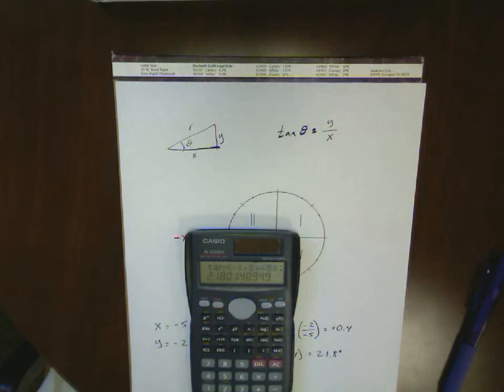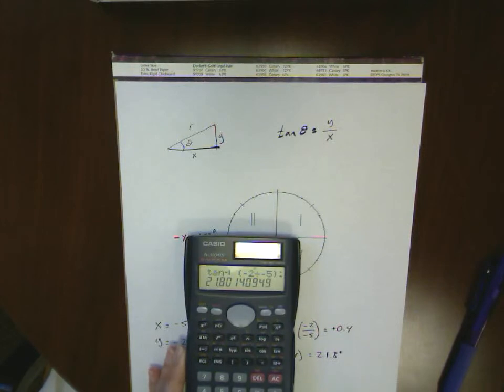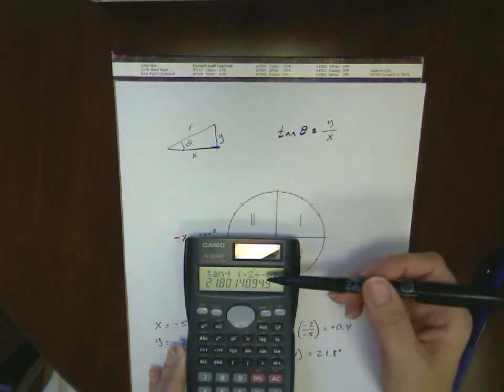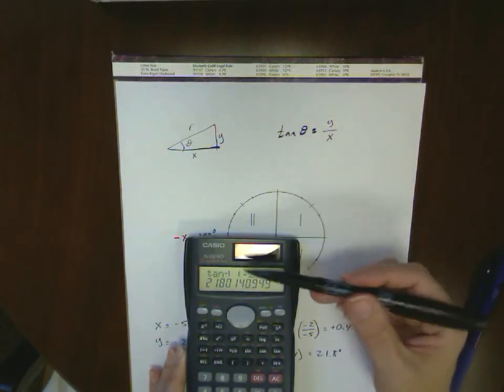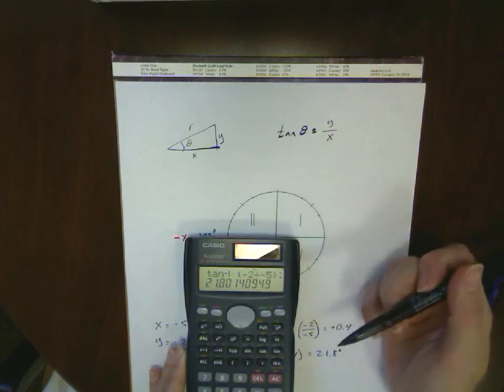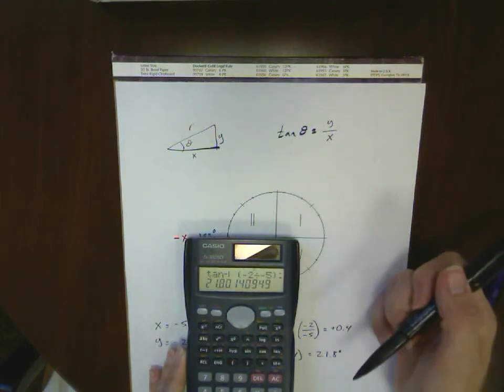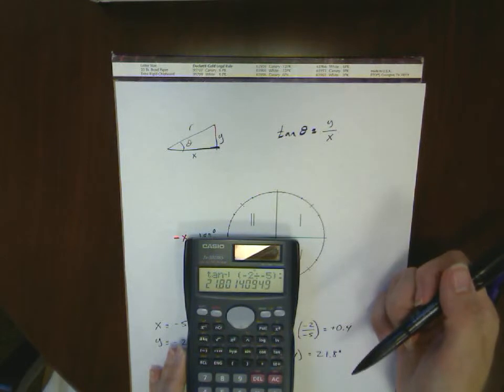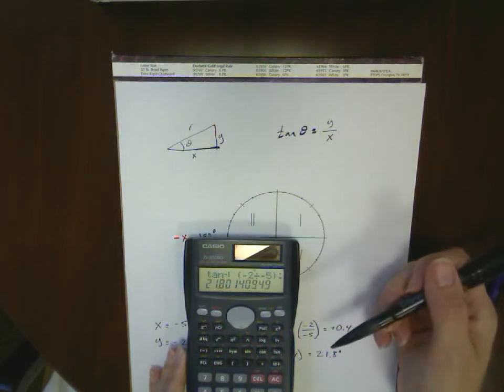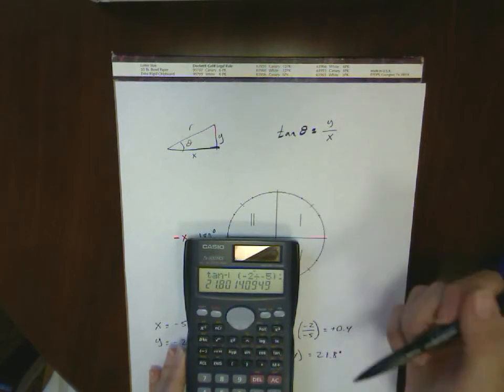And the reason it's doing that is because it evaluates what's inside those parentheses before it does the inverse tangent. Even though you've told them they're both negative, the calculator still doesn't know the difference. And most basic scientific calculators are this way. They're going to give you a number like 21.8, which appears to be in the first quadrant, but is not the actual angle you're looking for. So let's think a little bit more about this and what we can do.